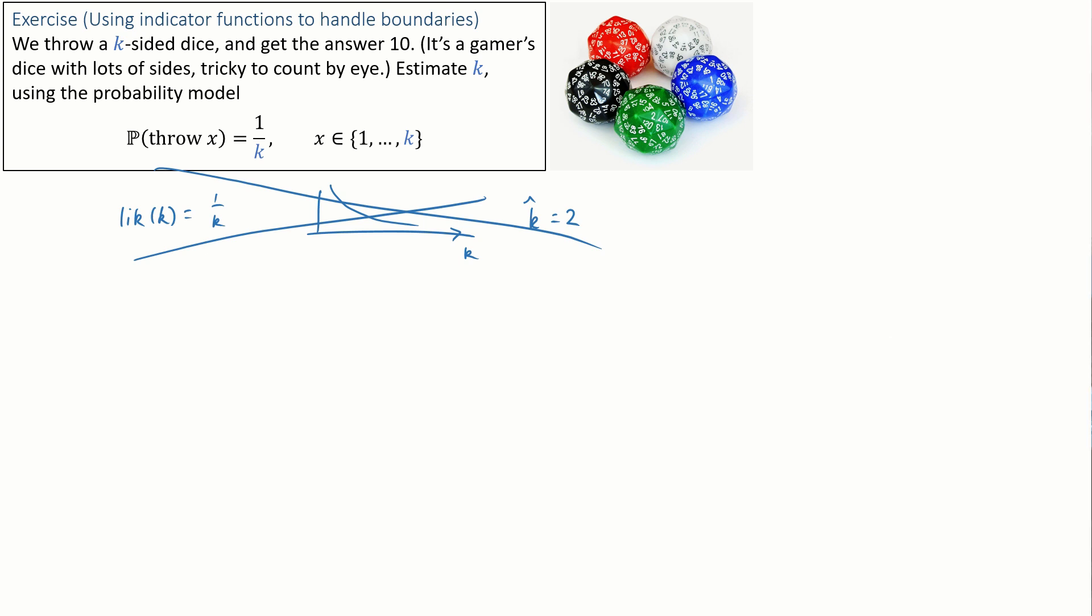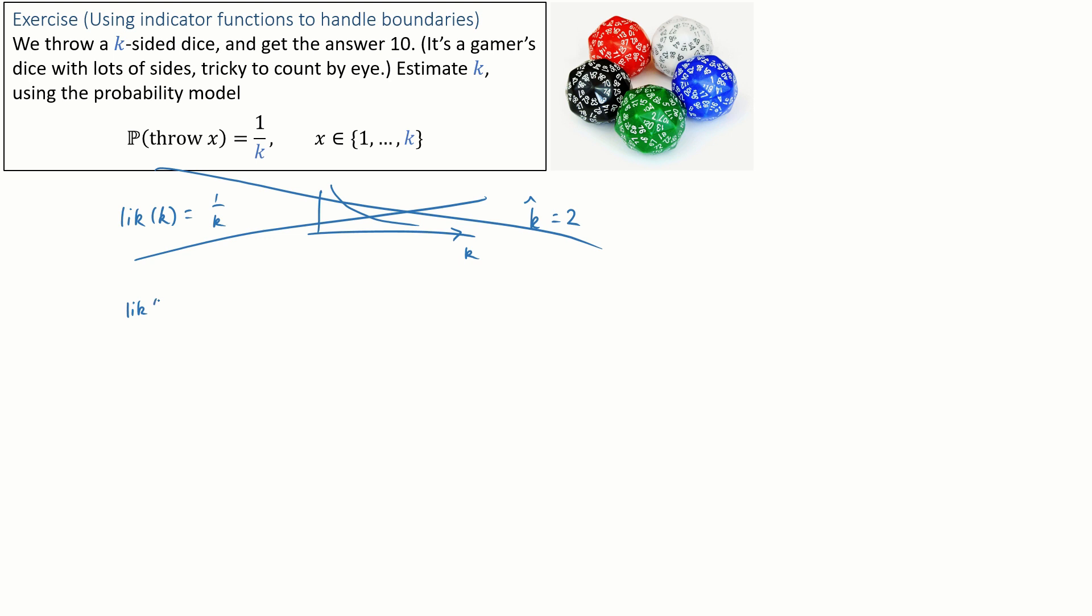Here's the better way to answer the question. Write out the likelihood. Likelihood is just the probability of observing the data given the parameter. This is the crucial thing that we failed to take account of before. The likelihood is zero if k is too small. This indicator function, that's what it's called, is just a way of writing conditions in algebra. The indicator function returns 1 if the statement is true, 0 if the statement is false, and this is called the indicator function.